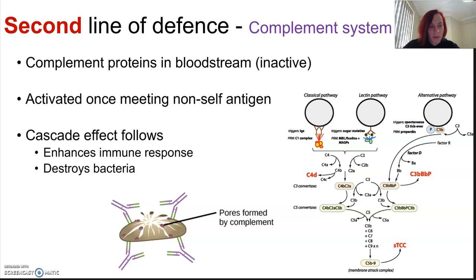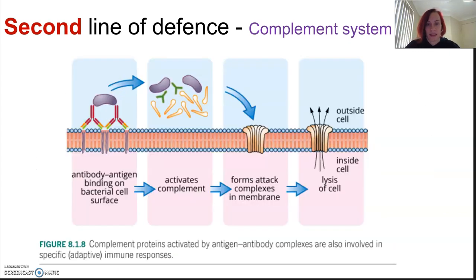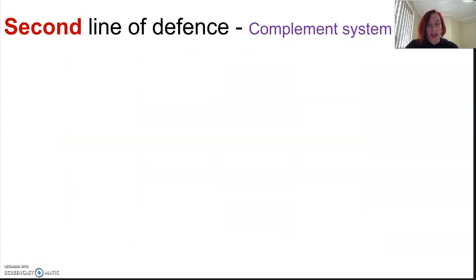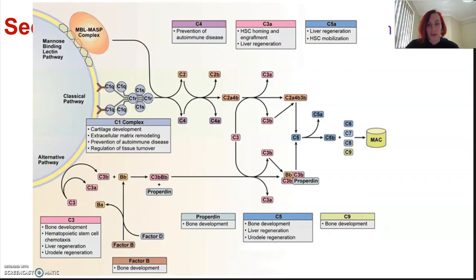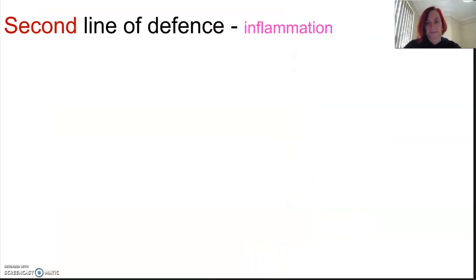Complement protein pathways are ridiculously complex — they are the worst thing to study. When you look at the picture in Pearson, it's nice and easy to follow, but if you go looking on the internet, you are going to drown in information because there are so many of these proteins. So be very careful with your further reading.